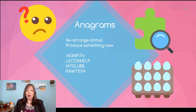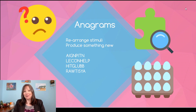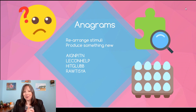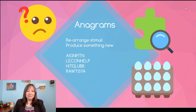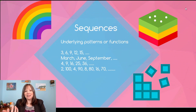Then we have anagrams. Anagrams require a lot of working memory because you have to rearrange things and hold them in your mind's eye, in your consciousness, to produce something new. I personally struggle with anagrams, but I did create four anagrams on this page — try and pause the video to figure them out. The first one is 'painting,' the second one is 'cell phone,' the third one is 'light bulb,' and the fourth one is 'stairway.' I was sitting at the base of a stairway looking at a painting and my cell phone when I made those up. If you like games like Boggle or Bananagrams, this may be more up your alley.